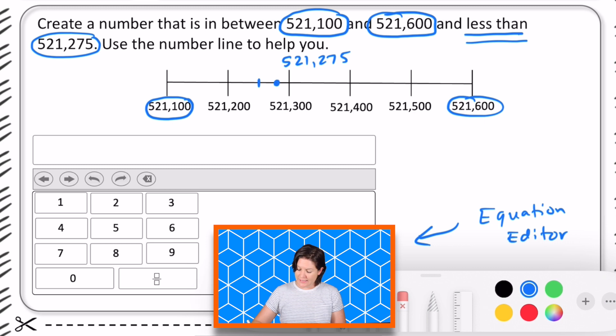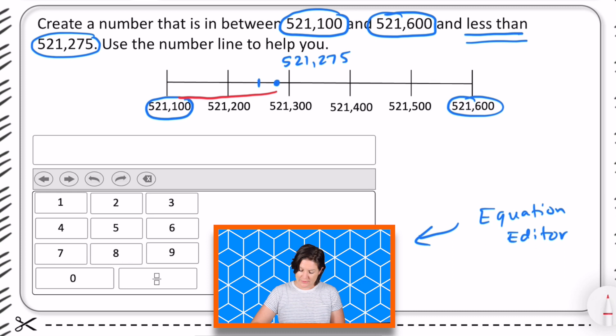So anything, anything less right here or less, but not quite the 521,100 would work, which means that we have a ton of answers that we can choose from.